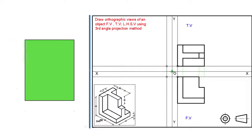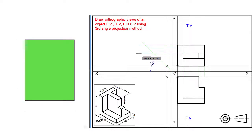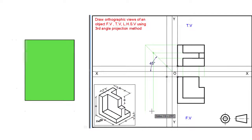With the help of a protractor, from point O draw a line of any length at 45 degrees as shown. With the help of a roller scale, take the projections of each point of the top view up to the 45 degree line and transfer it in the downward direction as shown.